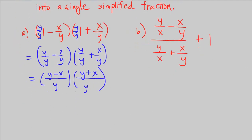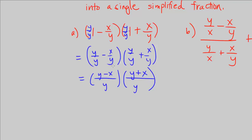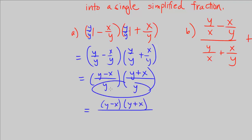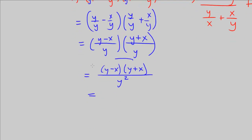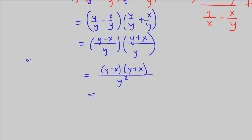Now we're able to multiply across. We have this equal to y minus x, times y plus x, over y times y — here's the y squared. So the last step is going to be to simplify by multiplying these two binomials. I'm going to use the box method.